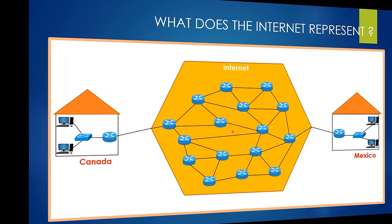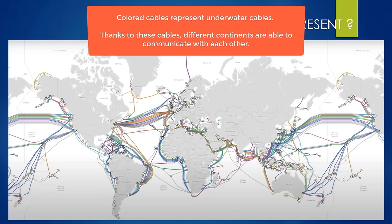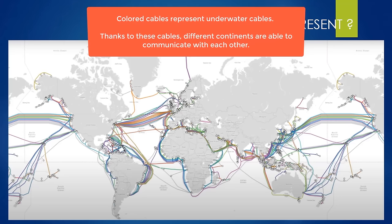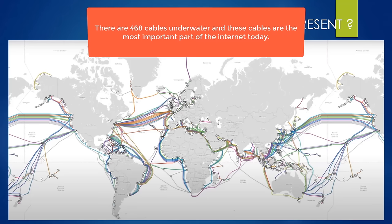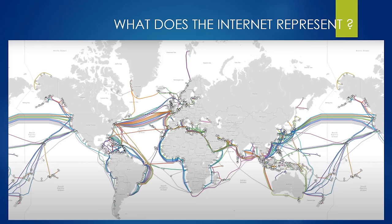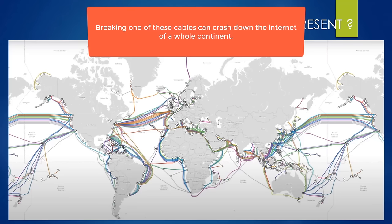Now I want to show you a visual that shows the cables between different countries and different continents. With this visual, you will understand much better what the internet is. These cables are very important, especially for the communication of countries that have an ocean between them. This visual represents real life itself. Unlike the simplified model we use, 99% of all international communication on the internet is provided by these 468 cable lines laid under the water.